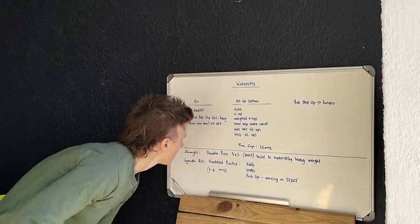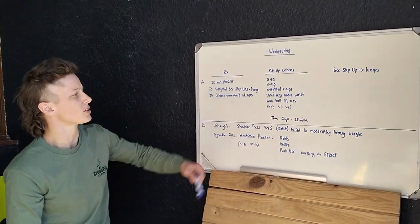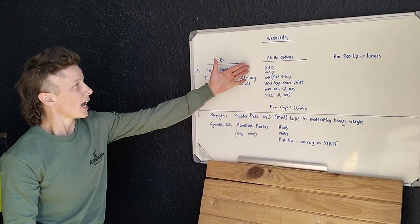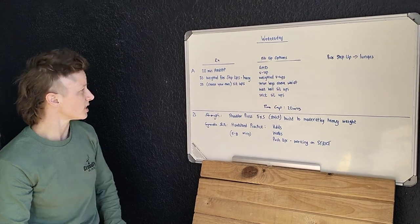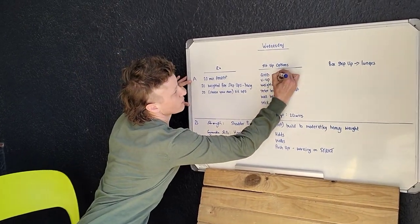With regards to the sit-up variations, we've given quite a few options that you can choose from. If you have a GHD at home or at the gym, by all means go for GHD. If you're going to do GHD, please remember it's slightly less, so we're going to go with 15 reps.